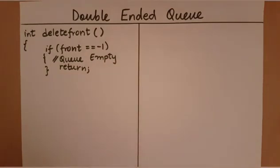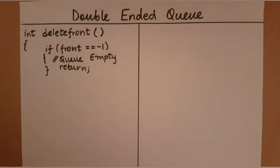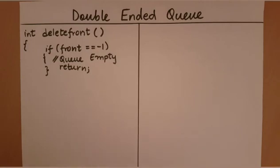When we know that the queue is not empty, the next thing we must check is if we are deleting the very last element. If there is only one element left and we are deleting it, we make the queue empty. As we discussed previously, whenever front surpasses rear we reset the values of front and rear back to their original values, which is minus one.